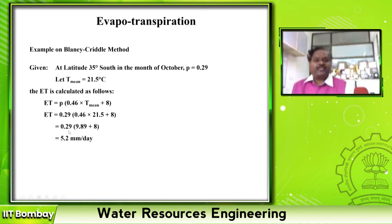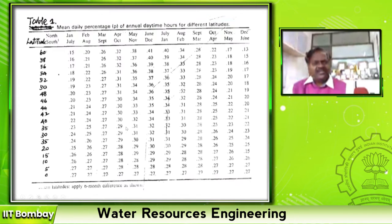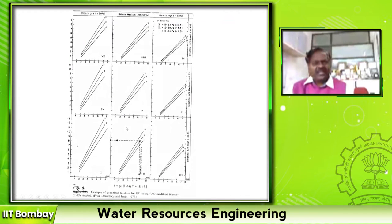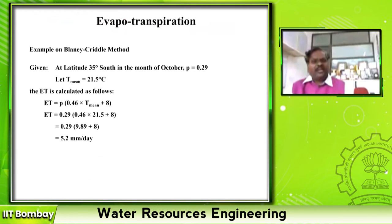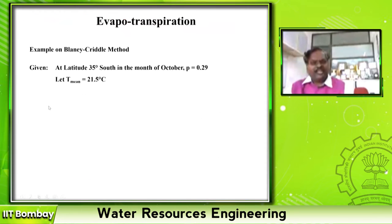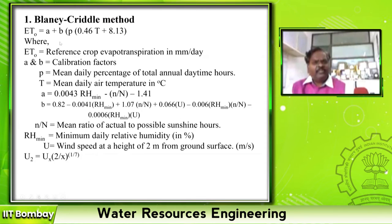I am multiplying this ET with 5.2 mm. If I use only this, then I have to use this graph to find out what is the value of A and B. Instead, since I know all the values, I can substitute in these two equations and estimate A and B.